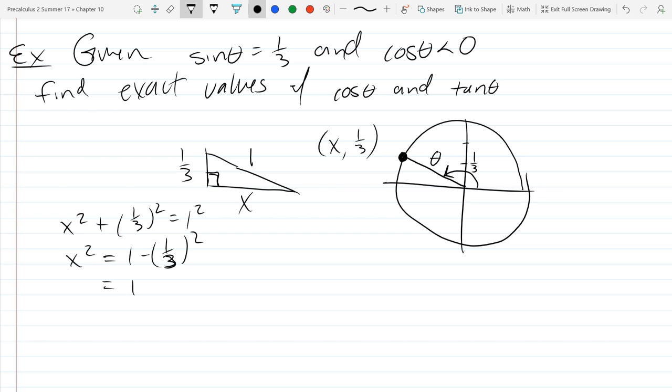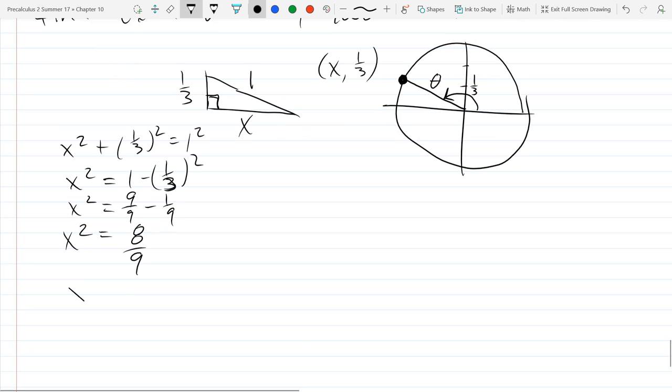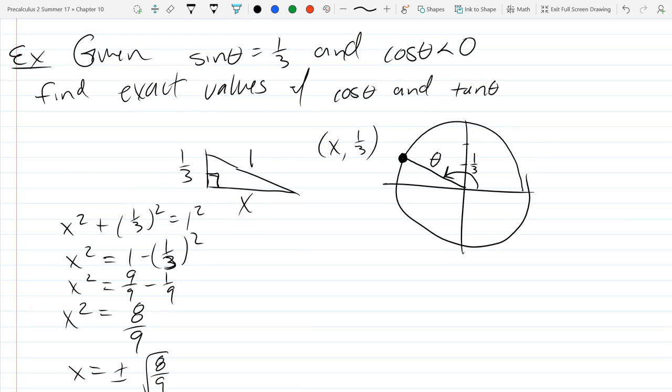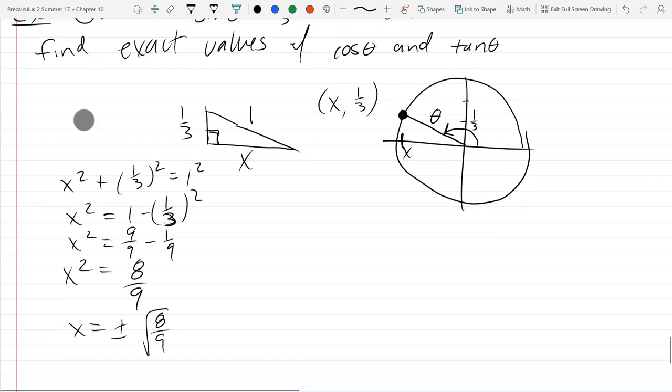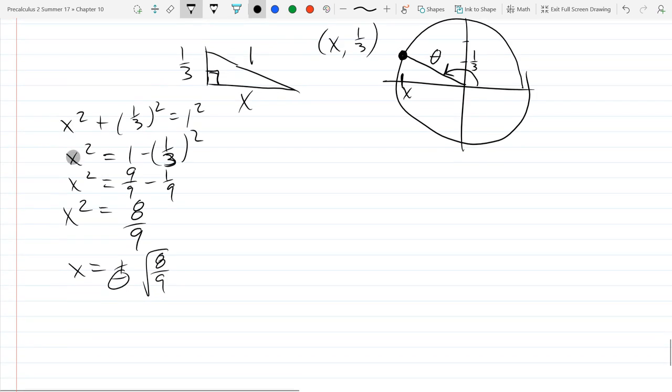And one third squared is one ninth. And, well, one minus a ninth, we better work at ninths. So we got nine ninths minus one ninth is eight ninths. So x is plus or minus square root eight ninths. First of all, we're at the side, positive or negative. Here's our x value right here. So you can see right here in quadrant two, we're going to go negative. So because we're in quadrant two, our x value is less than zero. It's negative.